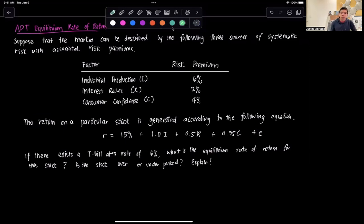Suppose that the market can be described by the following three sources of systemic risk with associated risk premiums. The first source stems from industrial production with a risk premium of six percent. The second source is interest rates with a risk premium of two percent, and the third source is consumer confidence with a four percent risk premium.